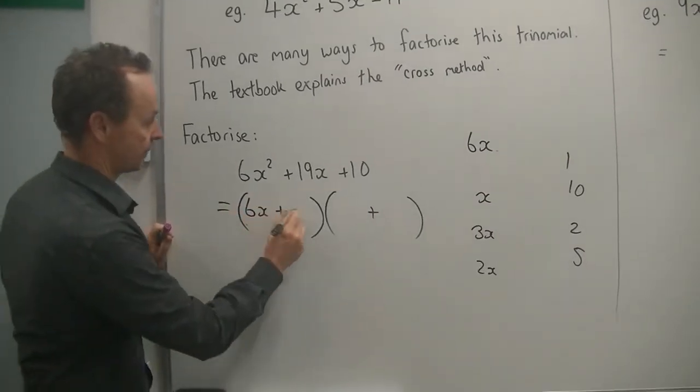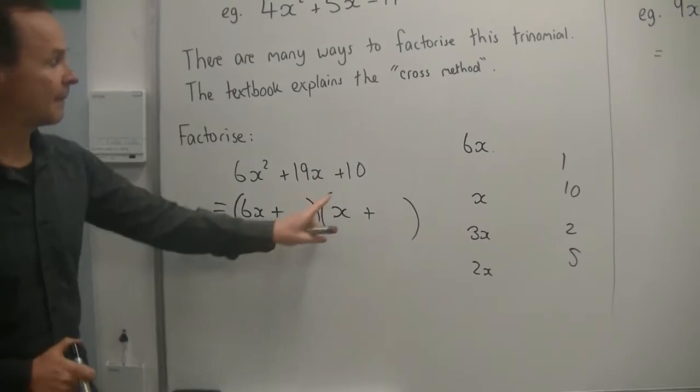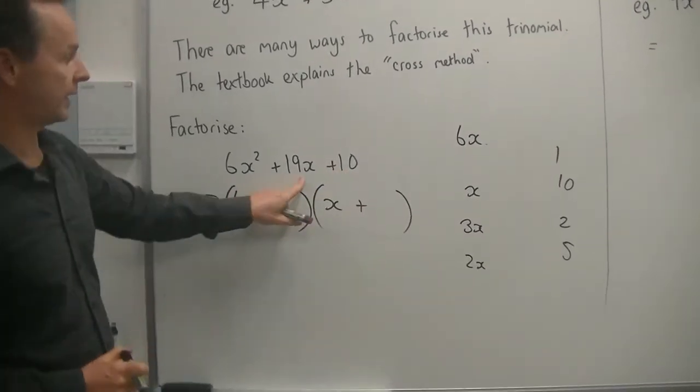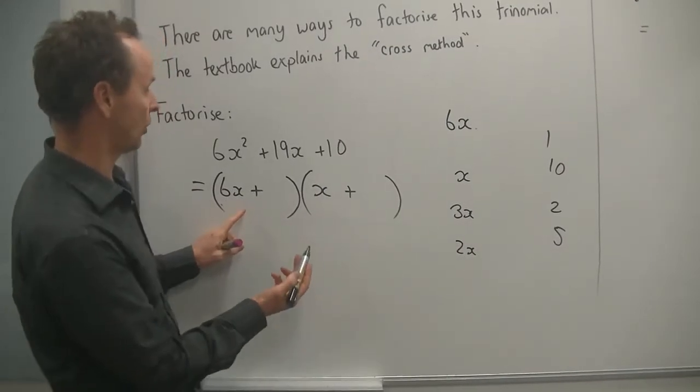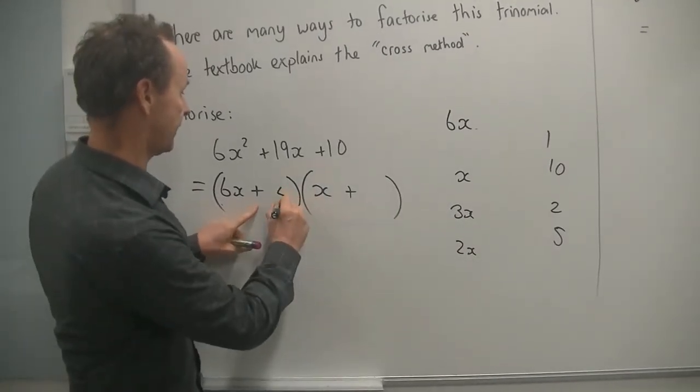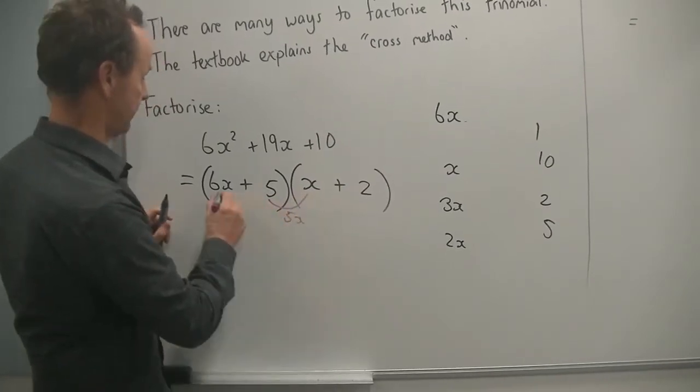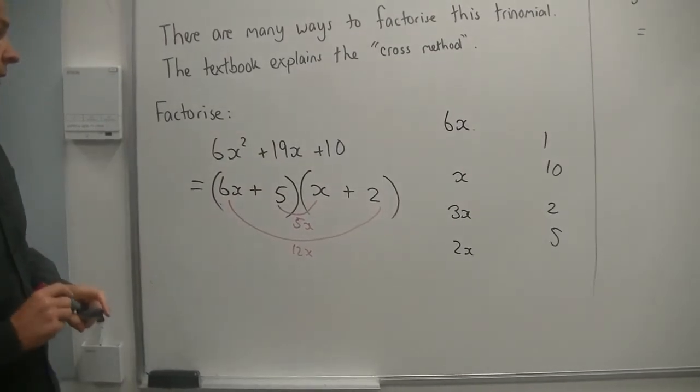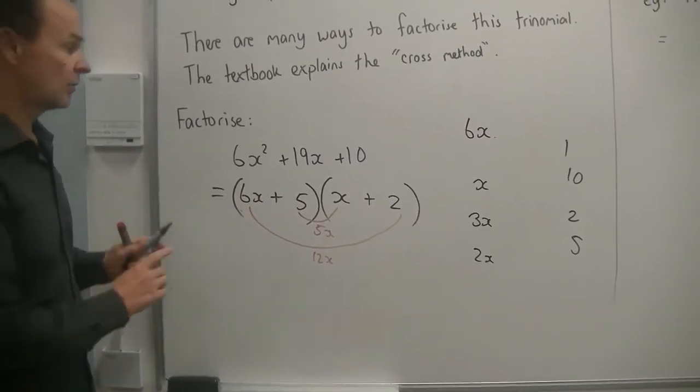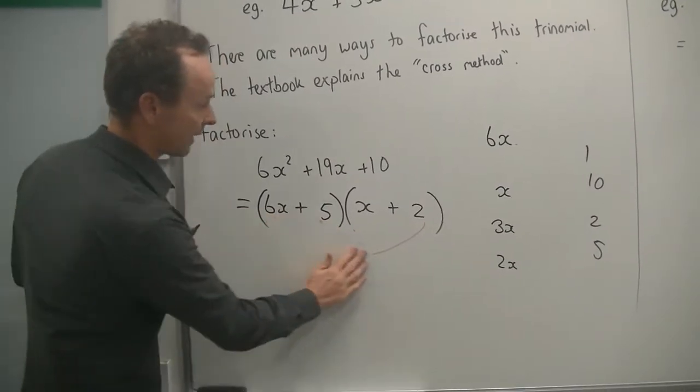So I'll start with 6x and x. So that's my guess. I'm trying 6x and x. Now factors of 10. And I need to get 19x as a middle term. I'm going to go 5 and 2. So if I put a 5 here and a 2 there, here I've got 5x and here I've got 12x. 5x and 12x, does that work out? No, that adds up to 17x. So that is not the correct answer, not the correct combination. So we can rub that out.